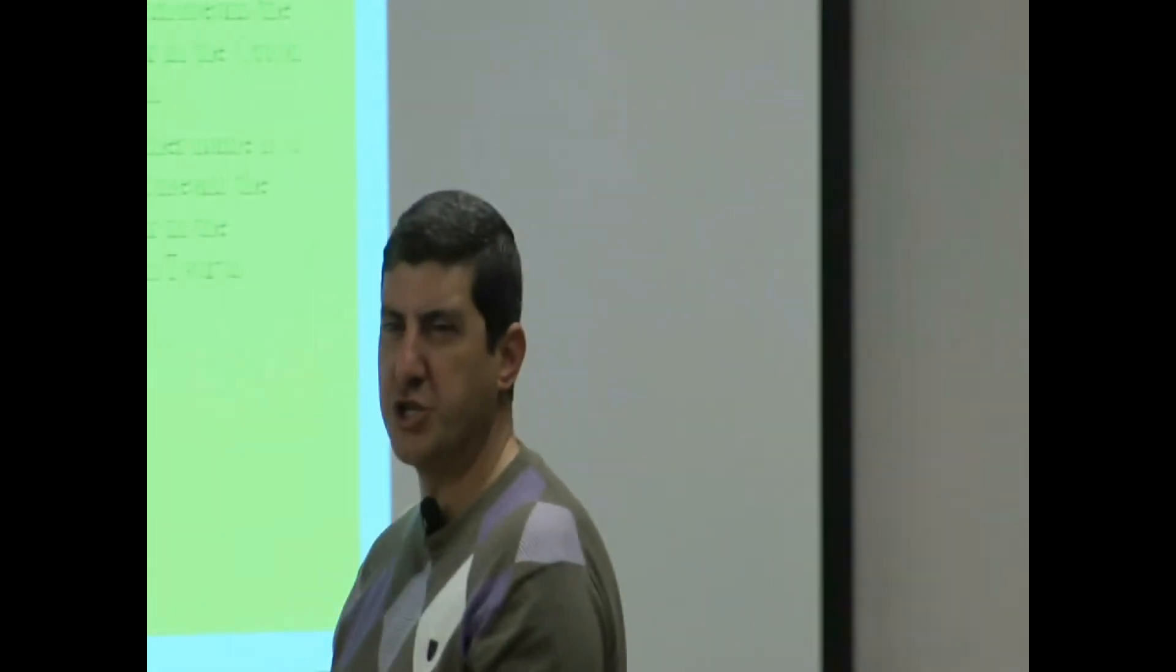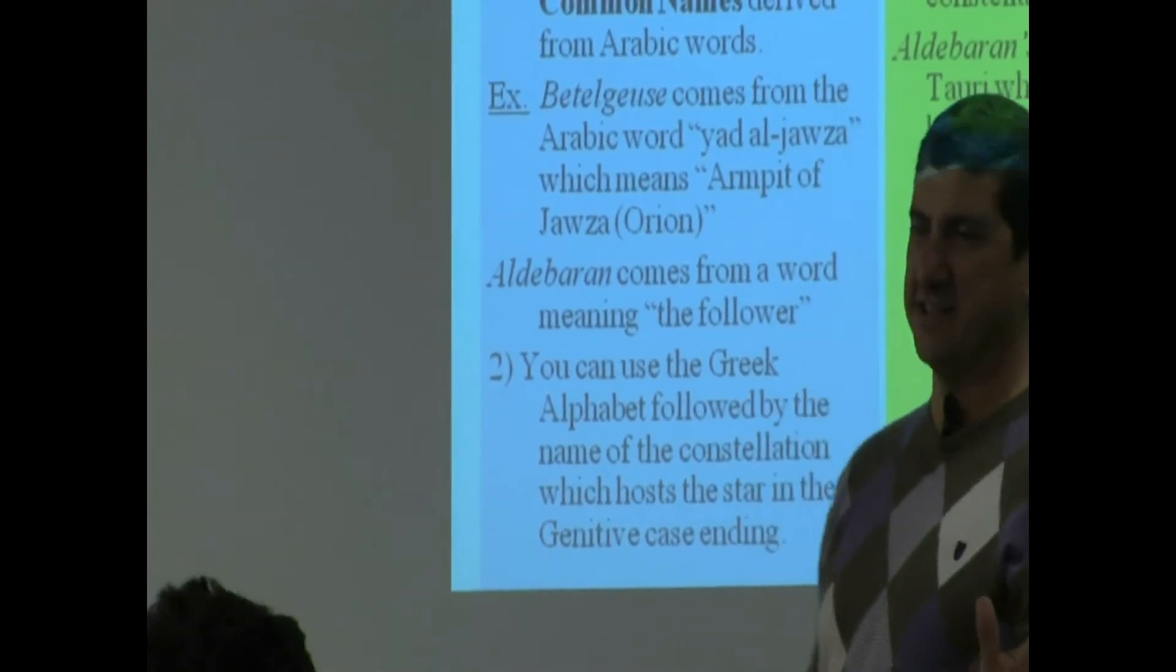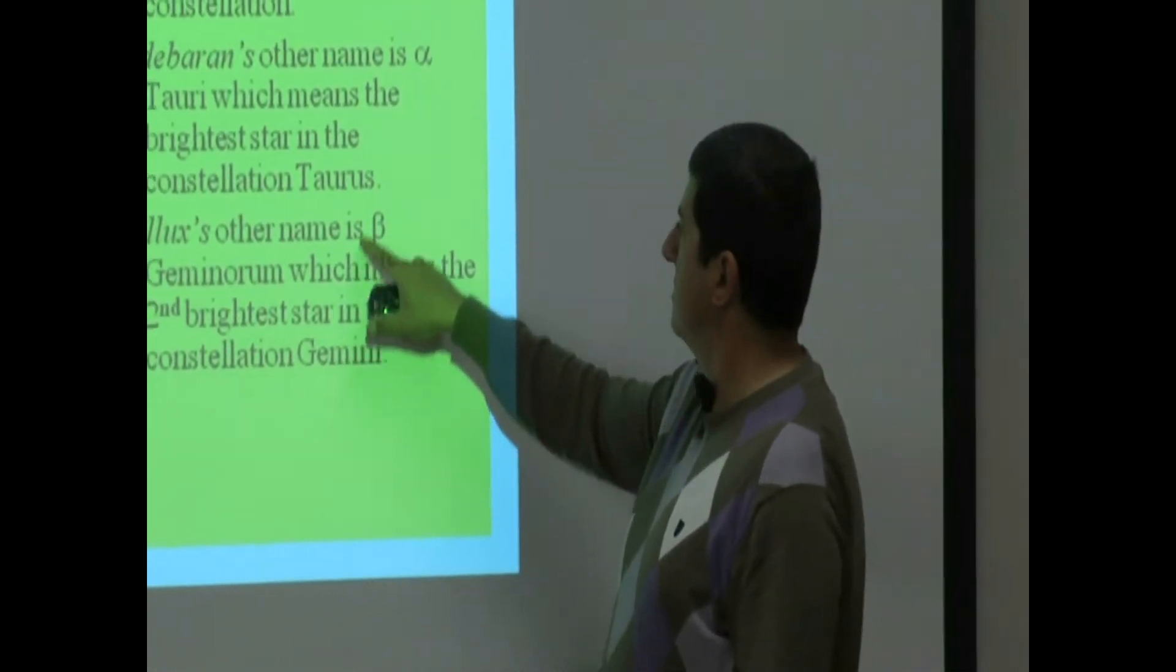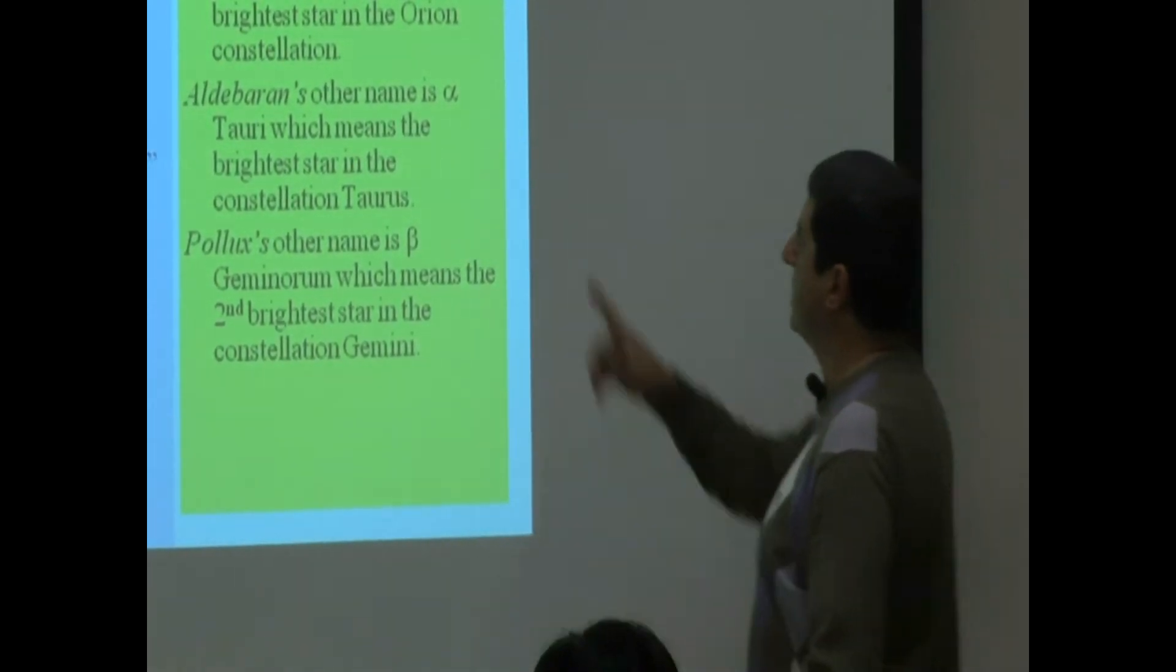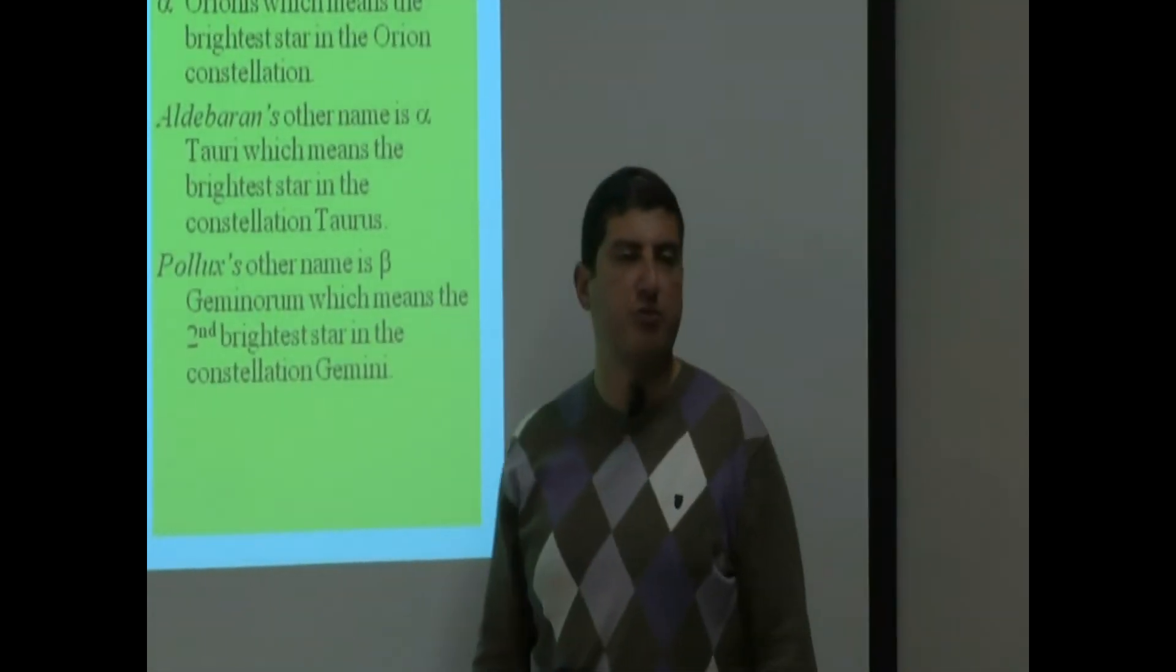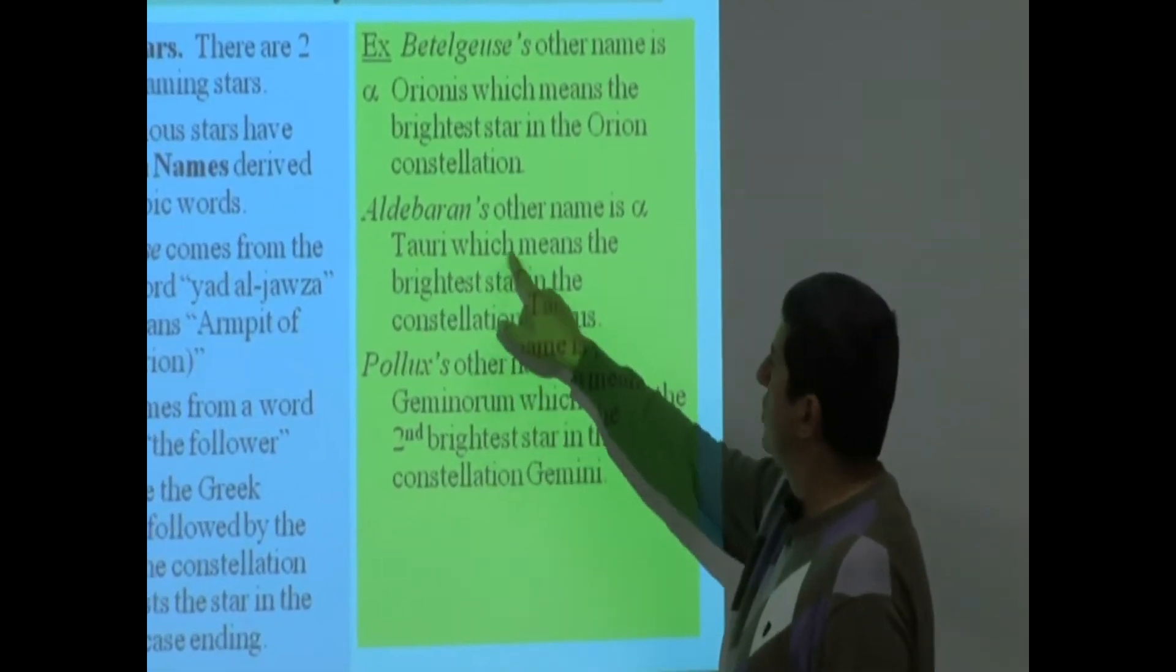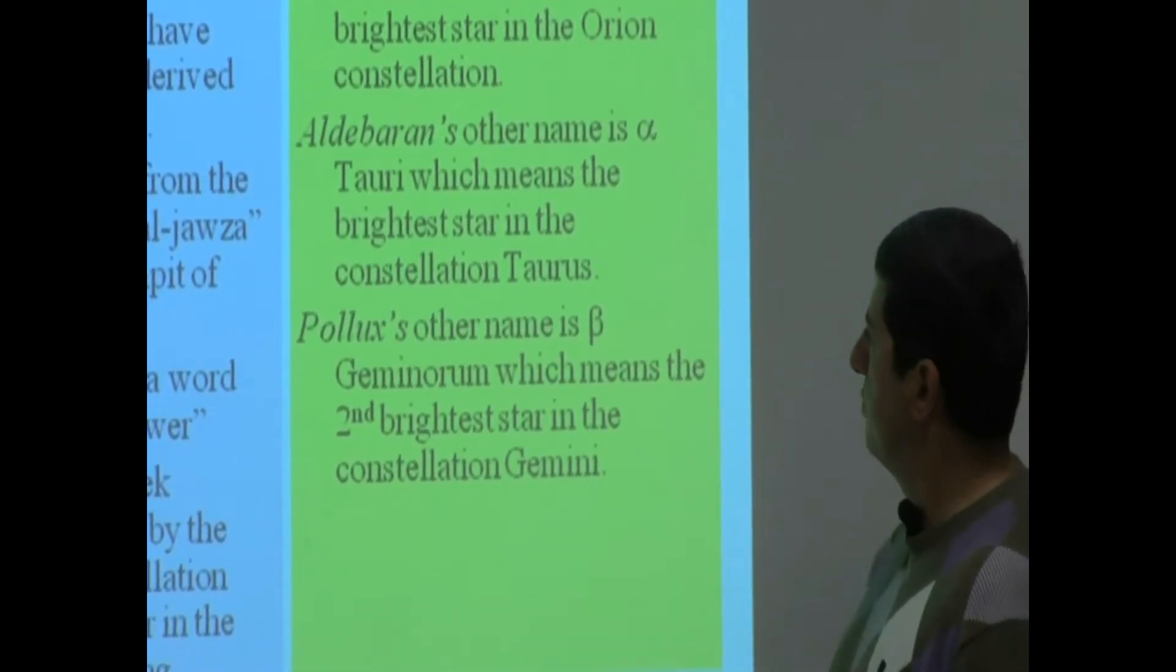Now am I going to require you to know the genitive case of all 88 constellations? No, then it would be like a Latin class. Forget it. You only have to know these three examples: the genitive case of Gemini, the genitive case of Taurus, and the genitive case of Orion. So Orion, Alpha Orionis means Betelgeuse is the brightest star in the constellation Orion. Aldebaran's other name is Alpha Tauri, which means the brightest star in the constellation Taurus. Pollux's other name is Beta Geminorum, which means the second brightest star in the constellation Gemini.